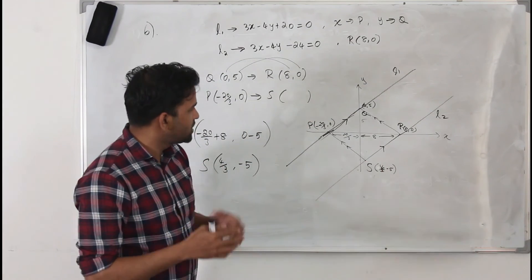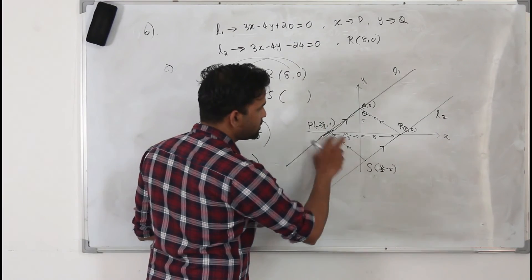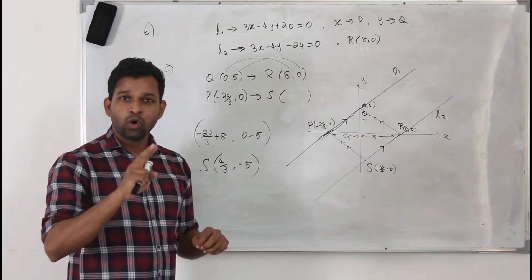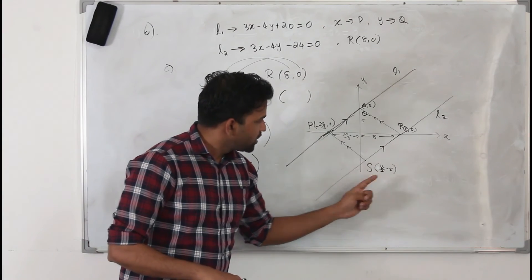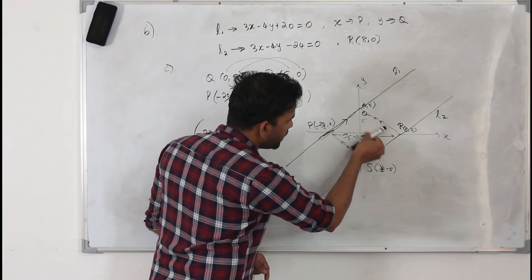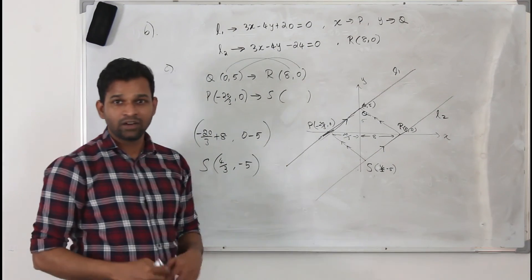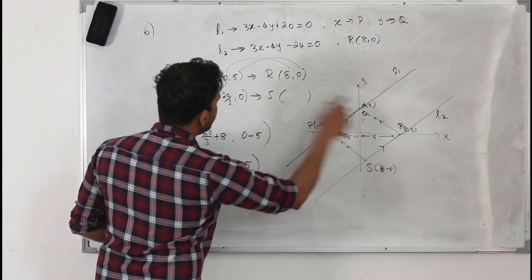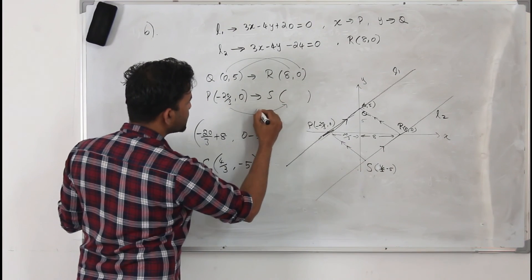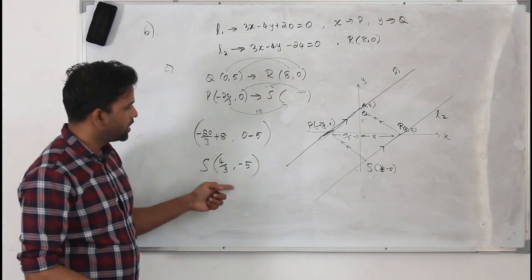Since this question has only 2 marks, you're not supposed to spend more than 2 minutes on it. To recap: compare Q(0, 5) to R(8, 0) — x increased by 8, y decreased by 5. Apply that same translation to P(minus 20/3, 0): add 8 to x gives 4/3, subtract 5 from y gives minus 5. The coordinates of S are (4/3, minus 5).